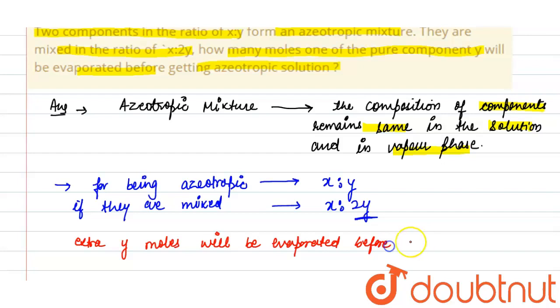So, to make the same composition, the extra y moles will be evaporated before getting azeotropic mixture. So, the answer is: extra y moles will be evaporated.